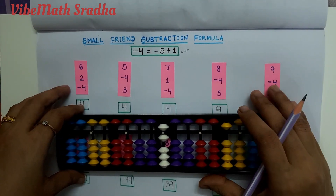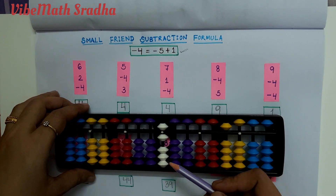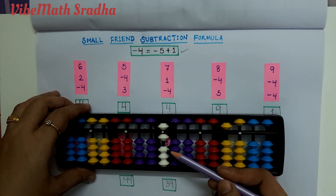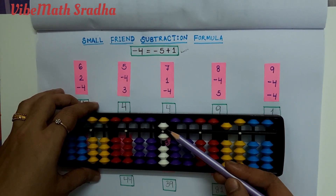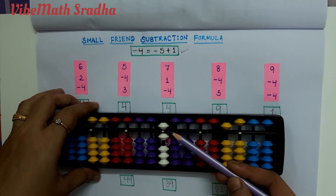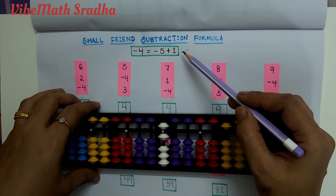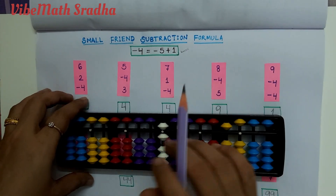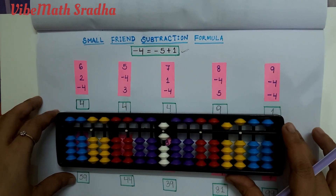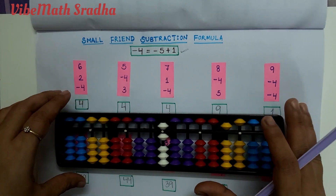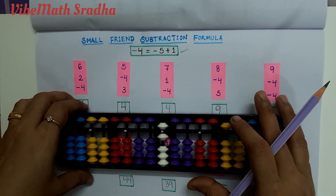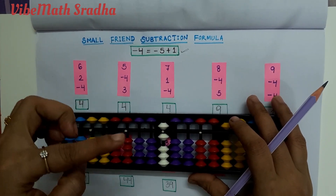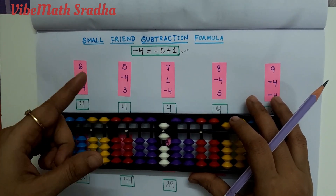So when and how can we apply this formula? If we need to subtract 4 but we do not have enough ones-place digits to subtract 4 directly, but we have the upper digits available, in this situation we can apply this formula: minus 4 equals minus 5 plus 1. After solving all these examples, I hope you clearly understand when and how to apply the small friend subtraction formula, that is minus 4 equals minus 5 plus 1.